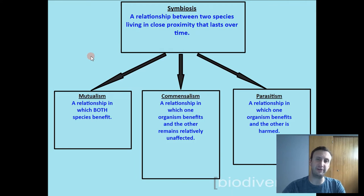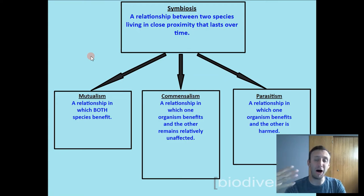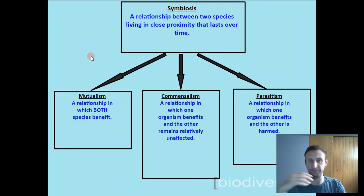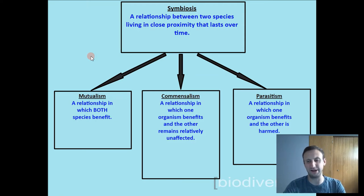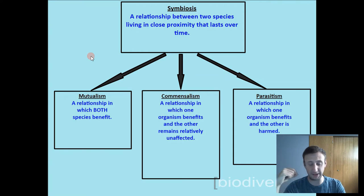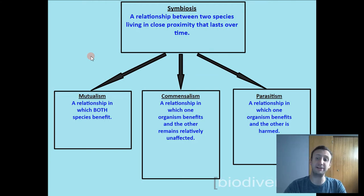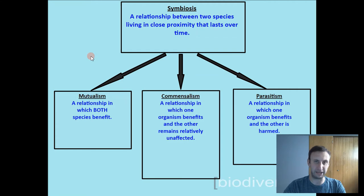Symbiosis is a relationship between two species living in close proximity that lasts over time. Mutualism is a relationship in which both species benefit — both end up being better off. In commensalism, one benefits and the other doesn't care — it's not a disadvantage or advantage, just unaffected. Parasitism is where one thing benefits — the parasite — and the other is very much harmed. It's a long-lasting relationship, not predator-prey, where one benefits and the other is hurt over a long period of time.